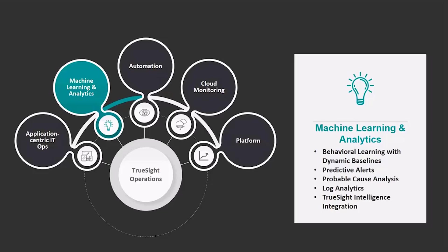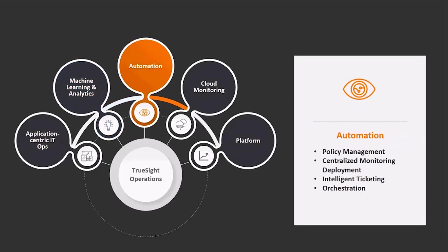Another example is leveraging this information to provide a probable cause analysis — looking across multiple metrics and devices to determine the most likely cause of an impacting event. The other area we invested heavily in is log analytics. While metric data will typically give you the ability to pinpoint the device and metric that is a problem, the root cause of why it's a problem is generally found in the log file. Log analytics provides the ability to collect, index, sort, analyze, and compare raw log data across your infrastructure.